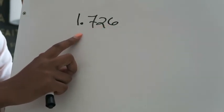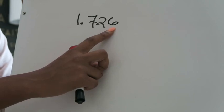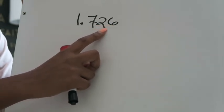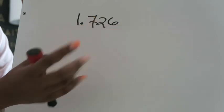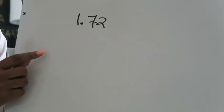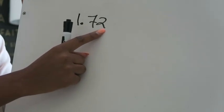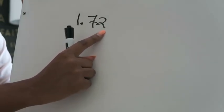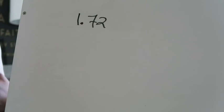You're going to read it up to the place value position the decimal goes to. In this case, the decimal goes all the way to the thousandths place — the six is in the thousandths place — so you read this as "1 and 726 thousandths." If I took the six away, it would only go to the hundredths place, so I'd read it as "1 and 72 hundredths."